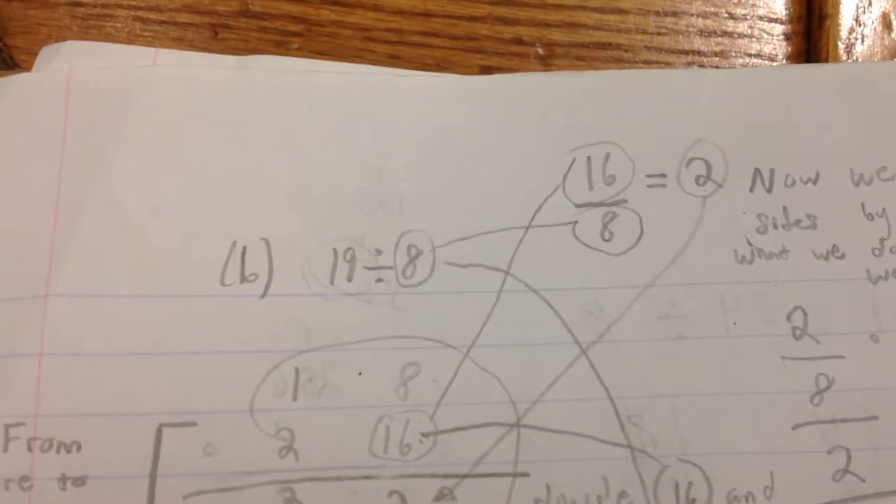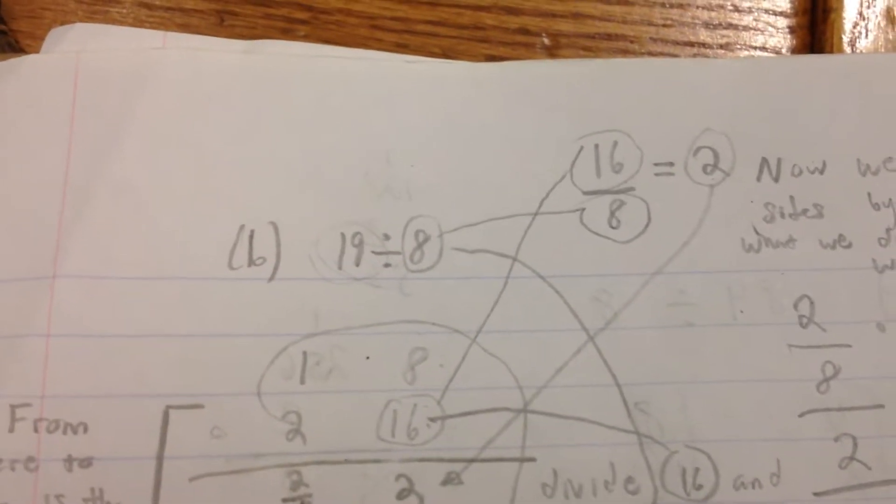Okay, so we have the problem 19 divided by 8, and we want to do it the Egyptian way.